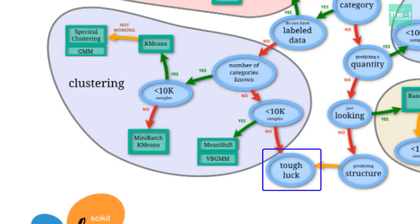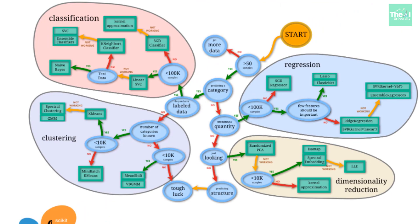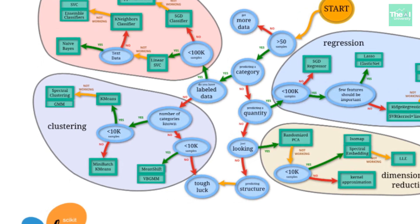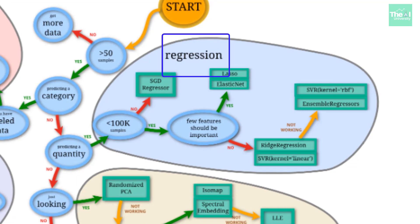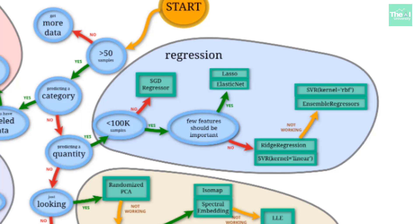Stepping back to where we check if we are predicting a category — if we are not predicting a category, we move to check if there is a requirement to predict a quantity. If yes, we fall into the regression family of algorithms. First we check if the dataset has less than 100,000 samples. If greater than 100,000, we choose SGD — the stochastic gradient descent regressor.